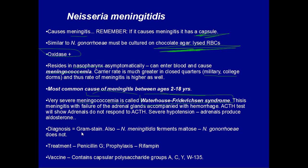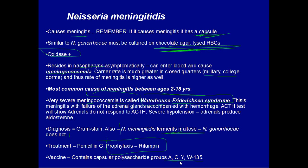Diagnosis is usually a gram stain — if you see the gram-negative red cocci, think Neisseria. An important distinguishing point: Neisseria meningitidis ferments maltose; gonorrhoeae does not. If you need to distinguish between the two, there you go. Treatment is Penicillin G. For prophylaxis in a college dorm or military outbreak, Rifampin is used. There is also a vaccine containing the polysaccharide groups from the capsule: serogroups A, C, Y, and W.